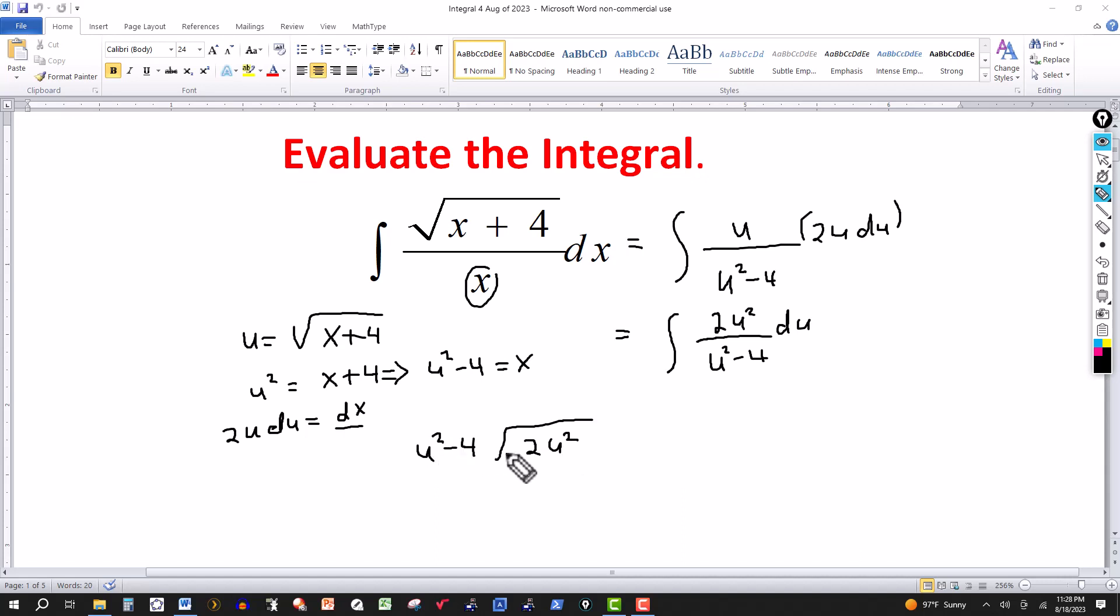Take 2u squared divided by u squared minus 4. So u squared into 2u squared, that would be a 2. 2 times u squared is 2u squared. 2 times minus 4 is minus 8. Then we subtract here. 2u squared subtract 2u squared cancels. 0 subtract minus 8 gives me a plus 8.